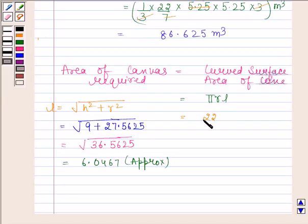Pi is equal to 22 by 7, r is equal to 5.25 meters and l is equal to 6.0467 whole meters square.